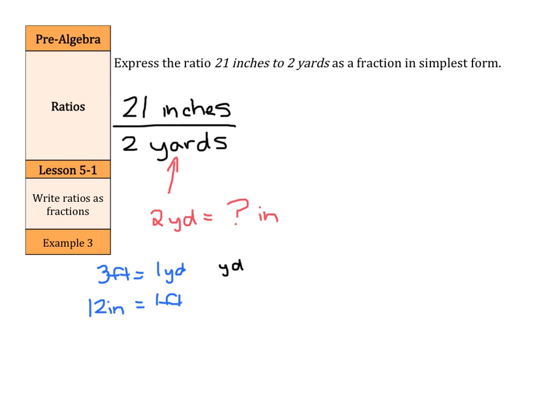What we can do is take our two yards and multiply it by three feet per yard to get six feet. So my two yards is equal to six feet.